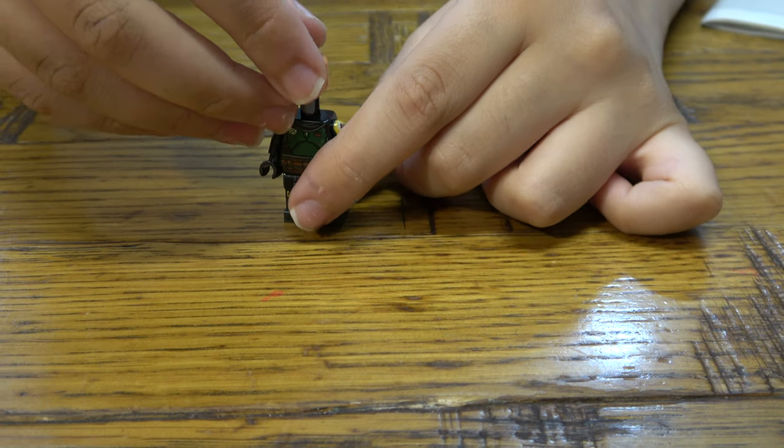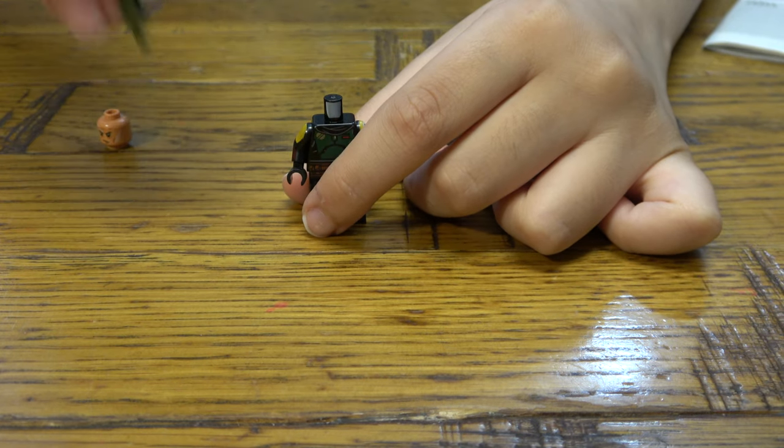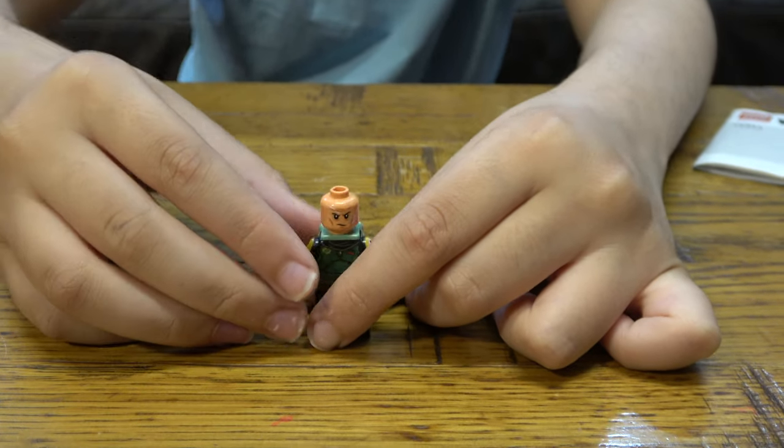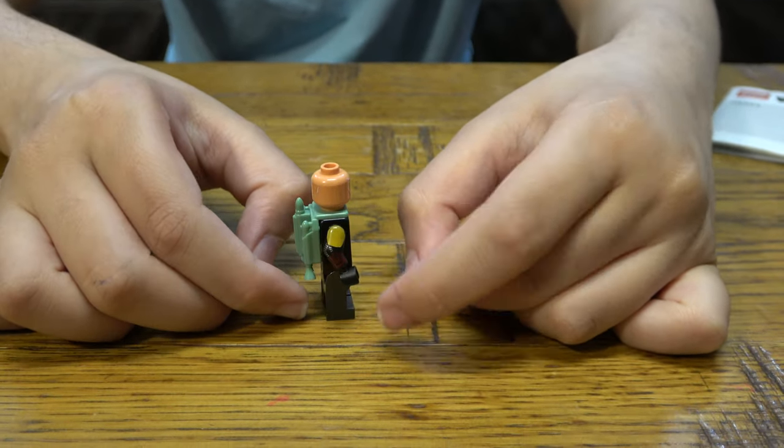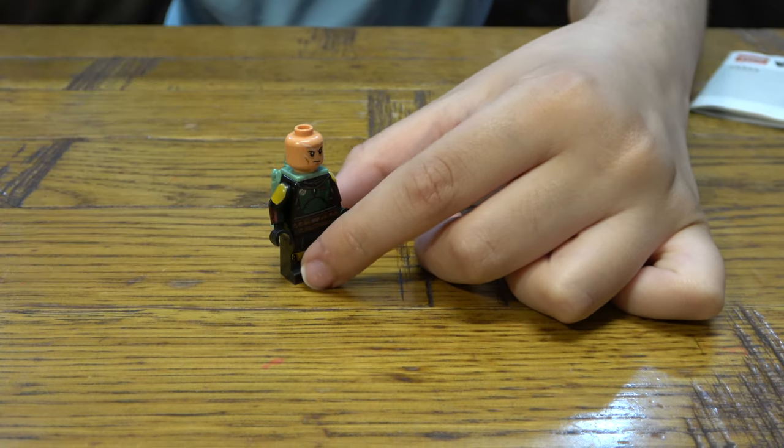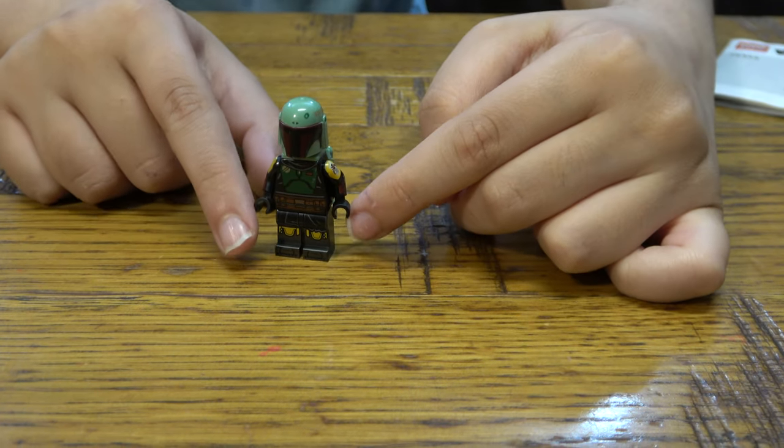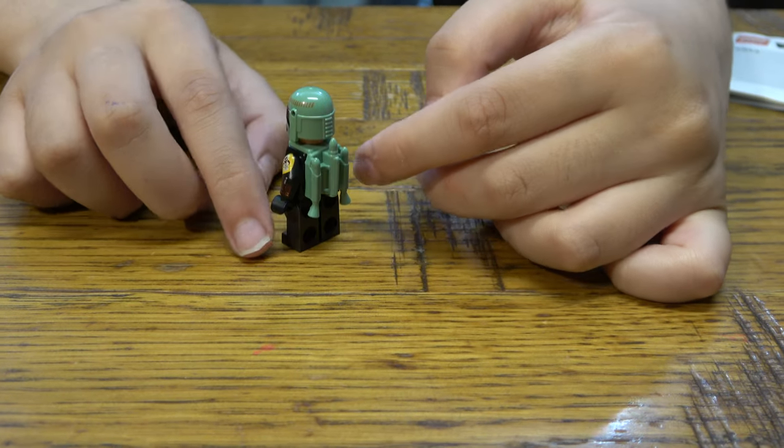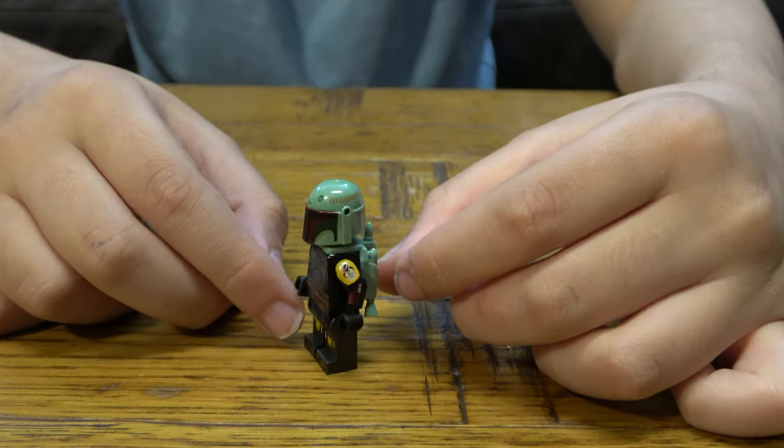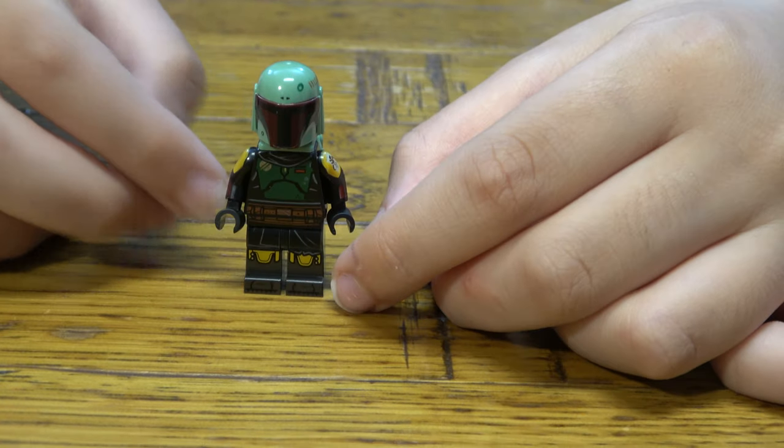I'm going to put the headpiece on. I'll put the jetpack on first and then the headpiece. Now you can see the beautiful print which looks amazing. And now we can finally put the helmet on. I know that Mech Boba Fett came in that new set. This is just like a darker version of Boba Fett. I'm probably going to get the Mech as well so I can have two different Boba Fetts.